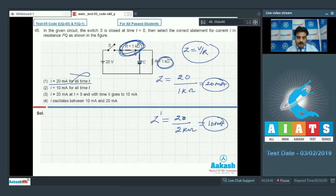Checking options: I equals 20 all time? No. I equals 10 all time? No. I equals 20 at t equals 0 and with time goes to 10 milliampere? Yes. Option 3 is correct. Thank you and we'll meet again.